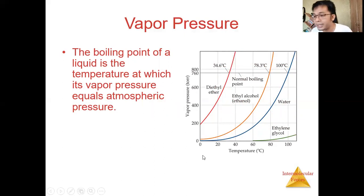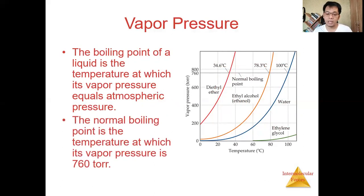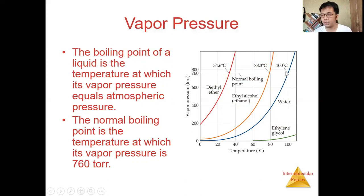So the vapor pressure of the liquid equals the pressure from the surroundings. The normal boiling point is the temperature at which its vapor pressure is 760 Torricelli or 1 atm. From the diagram, the y-axis shows vapor pressure in Torricelli versus temperature. The boiling point of water when it reaches 1 atmospheric pressure or 760 Torricelli is 100°C. For ethyl alcohol it is 78.3°C, and for ethyl ether it is 34.6°C.